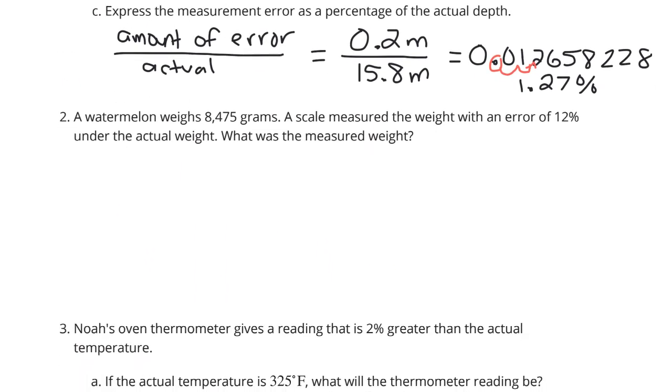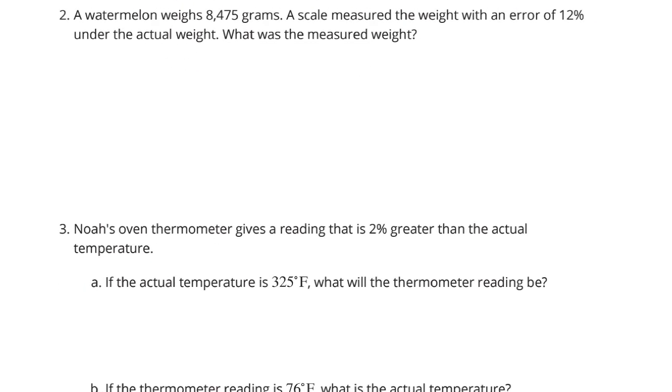What about question two? A watermelon weighs 8,475 grams. A scale measured the weight with an error of 12% under the actual weight. What was the measured weight? Well, if we take our 8,475 and multiply it by that 12%, we'll figure out how much error there actually was.